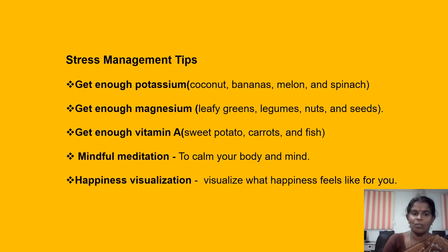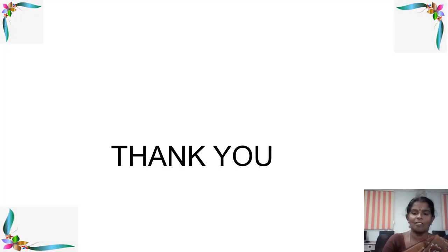Stress management tips: get enough potassium from coconut, bananas, melon, and spinach. Get enough magnesium to overcome stress by eating leafy greens, legumes, nuts, and seeds. Get enough vitamins from sweet potato, carrot, and fish. Mindful meditation helps make your body calm and your mind reflective. Happiness visualization: visualize what it feels like.